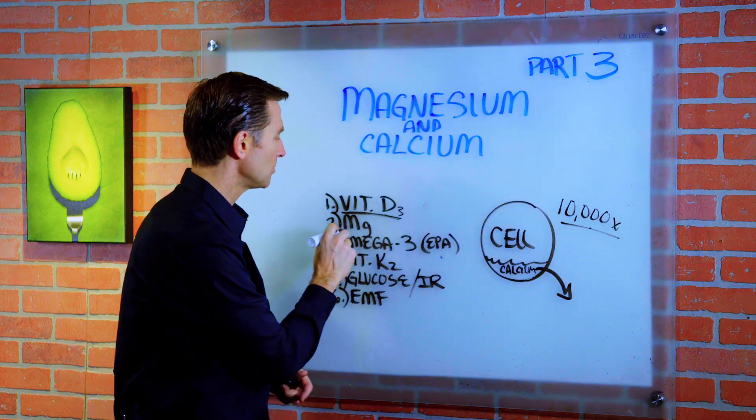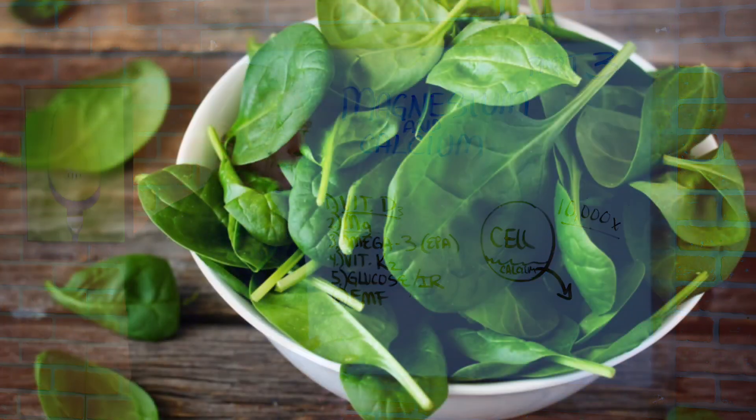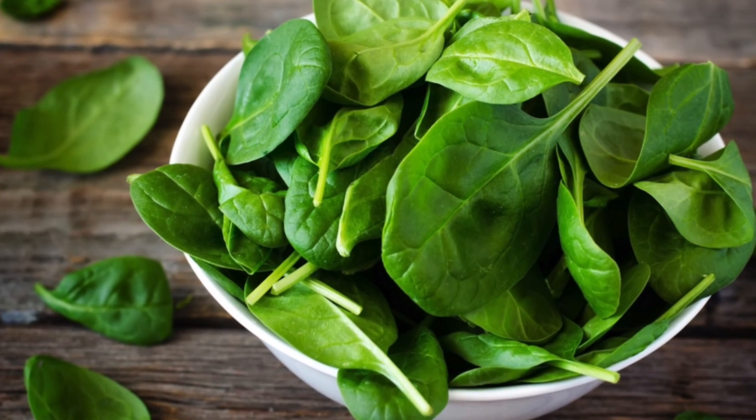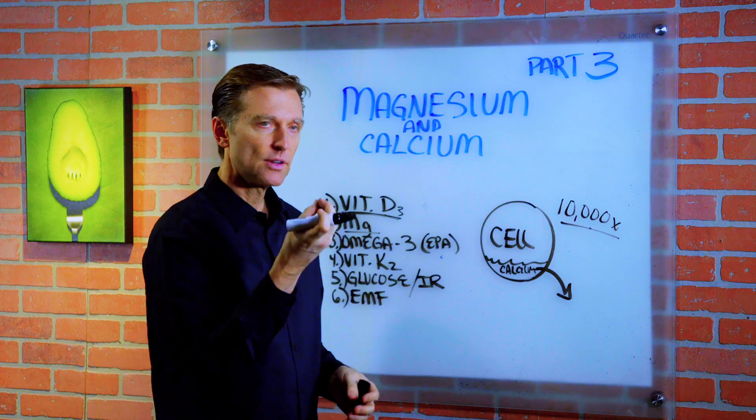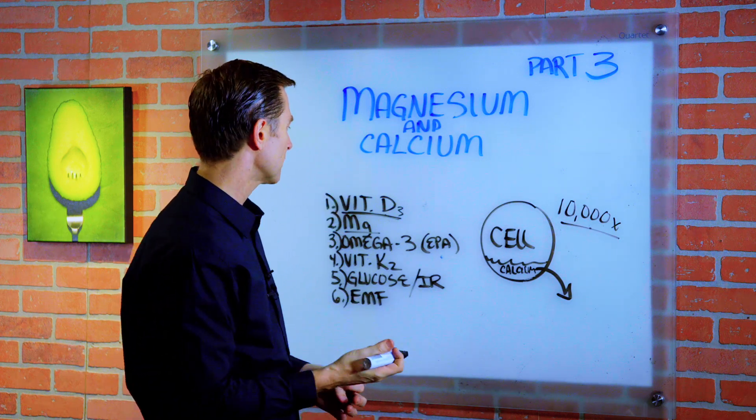This is why it causes blood pressure issues as well and muscle spasm and trigger points. You might just need more magnesium in the diet because you're not consuming enough leafy greens. At the heart of chlorophyll, which is the green of the blood of the plant, you have magnesium. A lot of people don't consume enough greens.